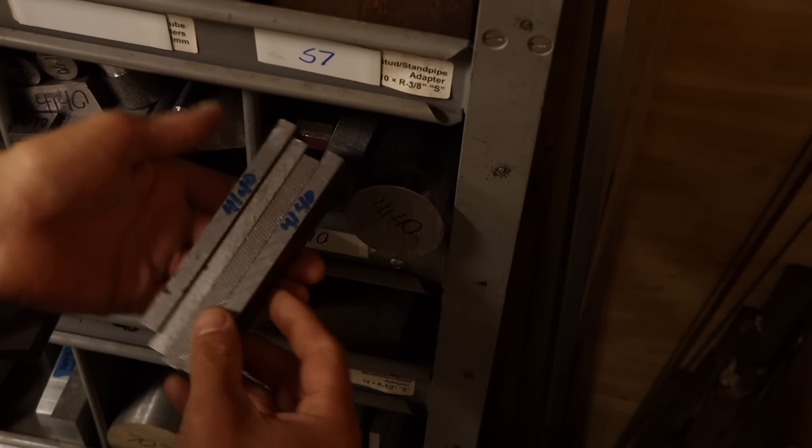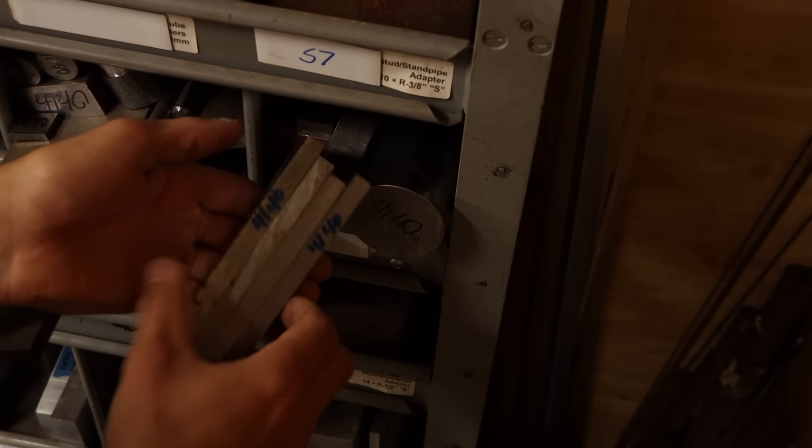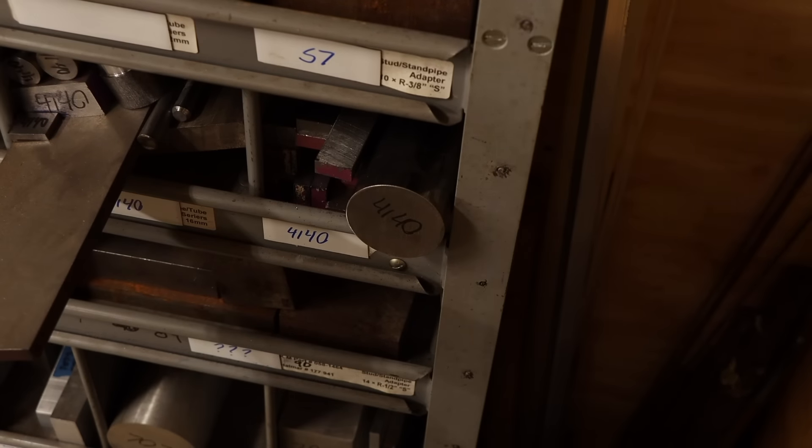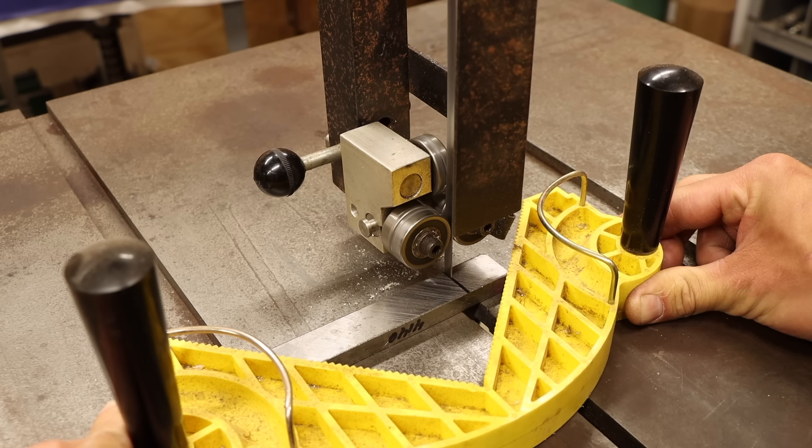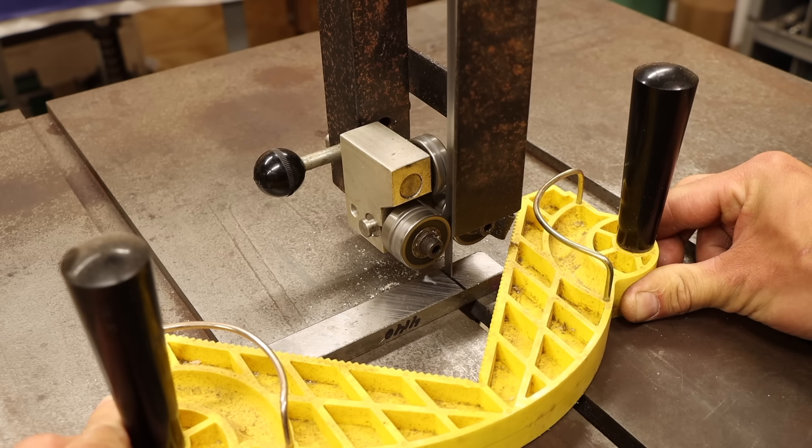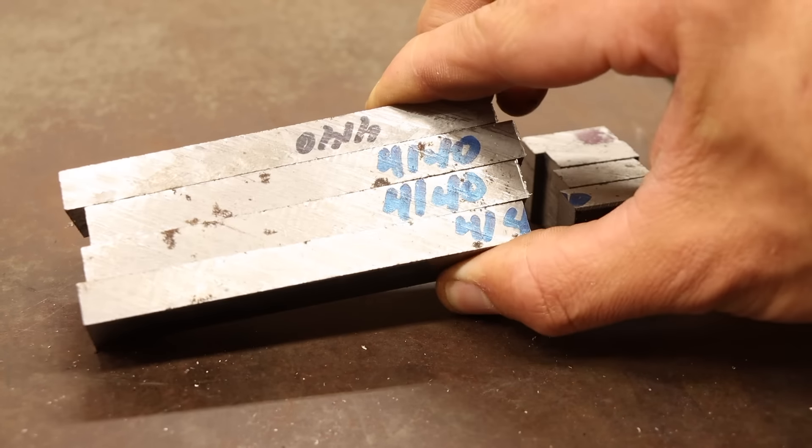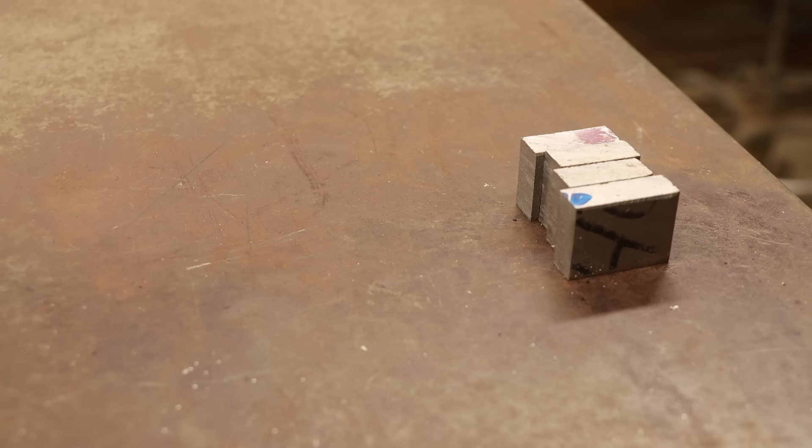I designed the main clamping bars around these offcuts of 4140 that were gifted to me, so I'll begin here. They're pretty close to the final shape I need, but are a bit too long, so first to pass through the shortening machine, then it's over to the mill to clean and square up all the faces.